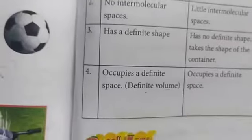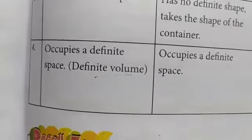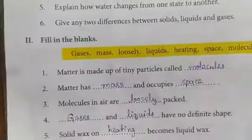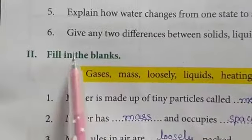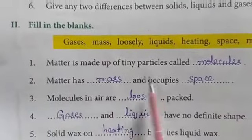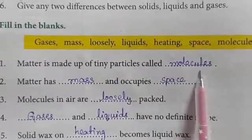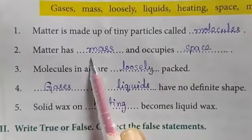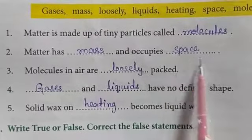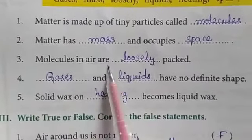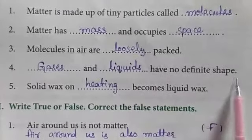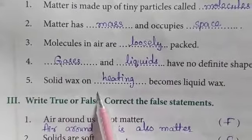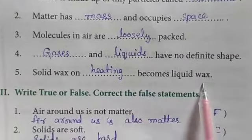Now we shall write the exercises for this lesson. Page 214 — fill in the blanks. Matter is made up of tiny particles called molecules. Matter has mass and occupies space. Molecules in air are loosely packed. Gases and liquids have no definite shape. Solid wax on heating becomes liquid wax.